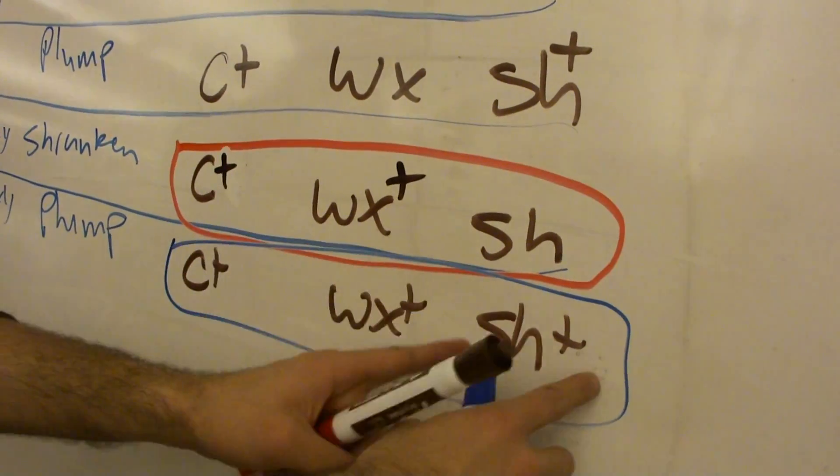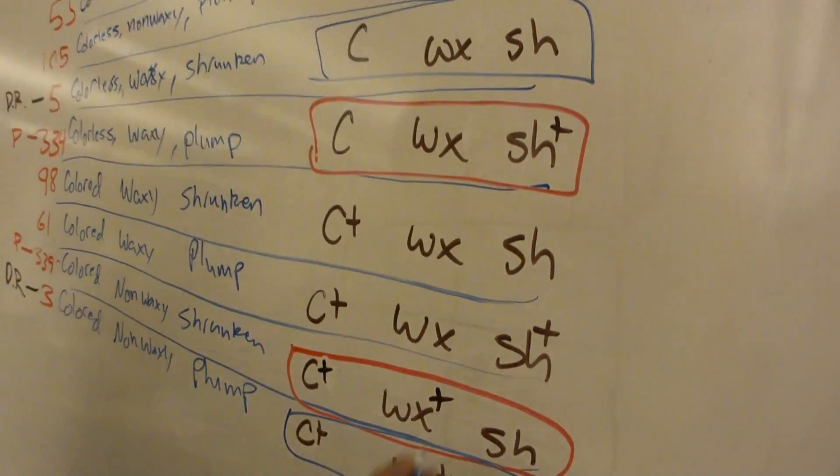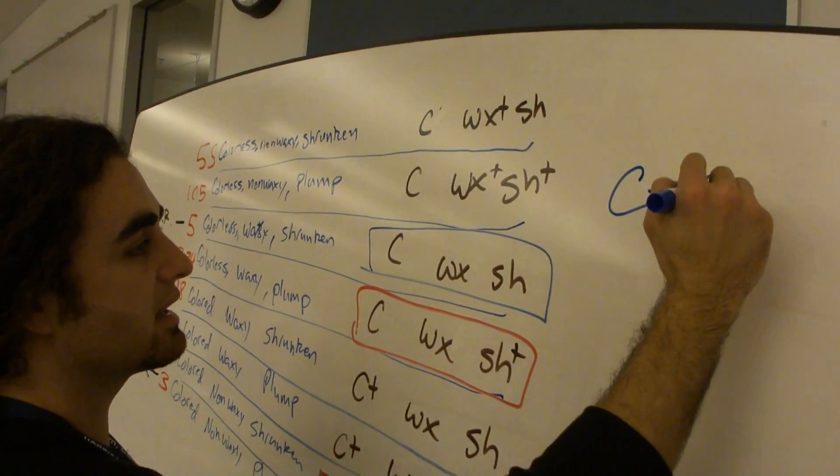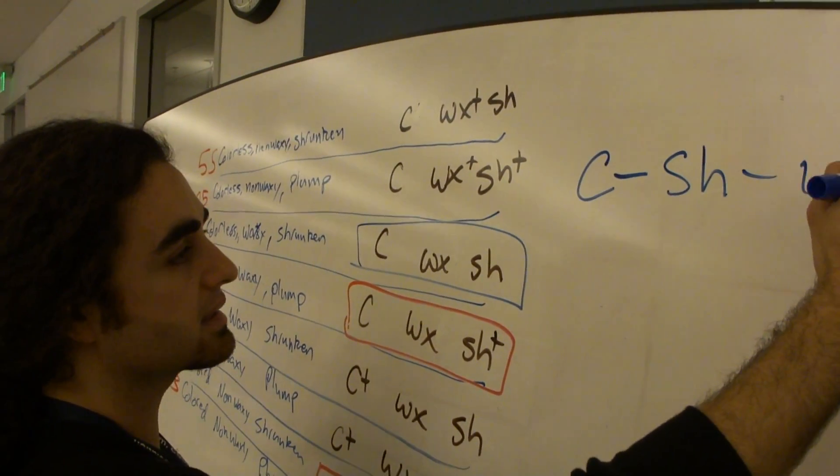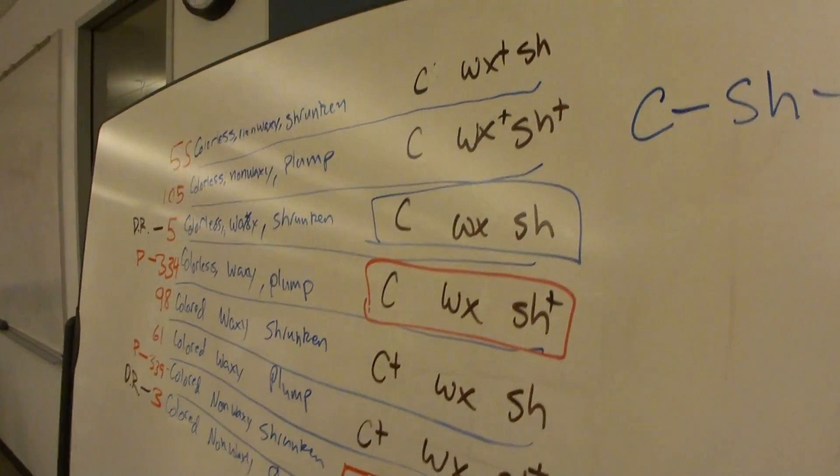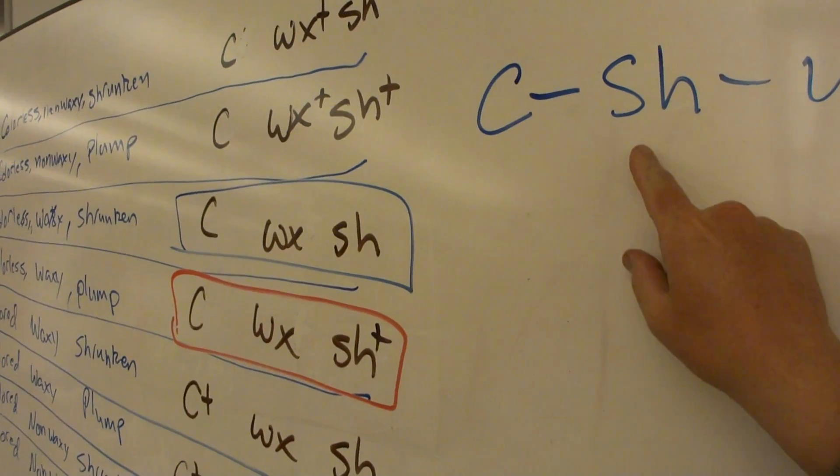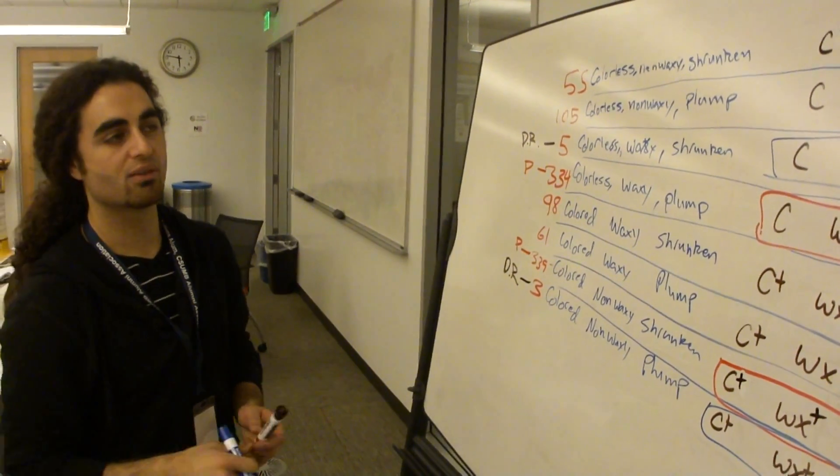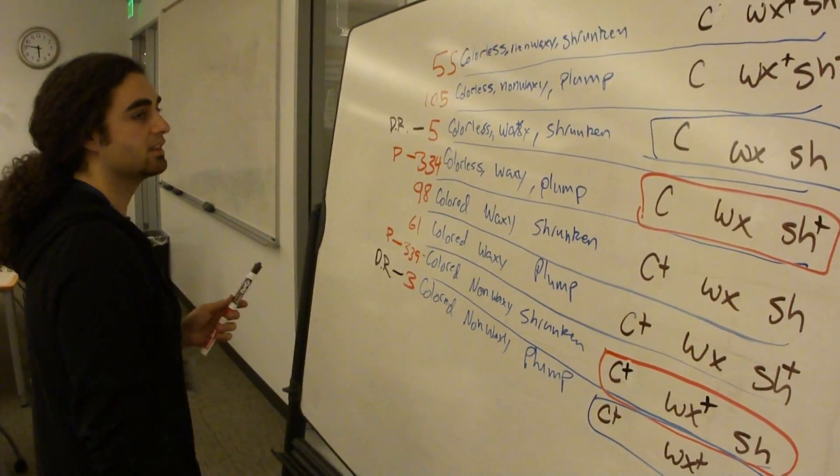So same, same, different. So with that, we can go ahead and assume that the order of the genes is C, SH, WX. And what you did was you ascertained which is in the middle. Yes. So it very well could be the WX and C were reversed. The key critical thing, I think, is that SH is in the middle. Cool. So that's going to tell us which one to add the double recombinants twice to whenever we're getting our recombination frequency between the two genes.